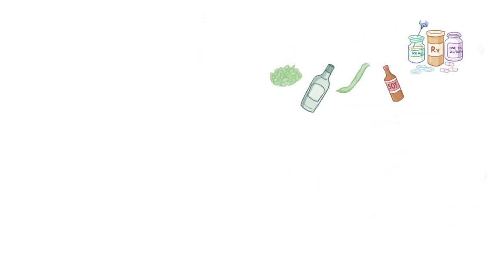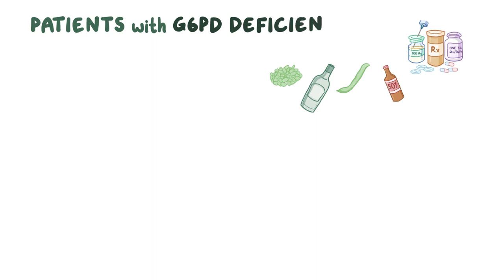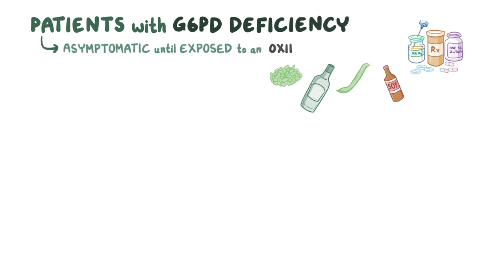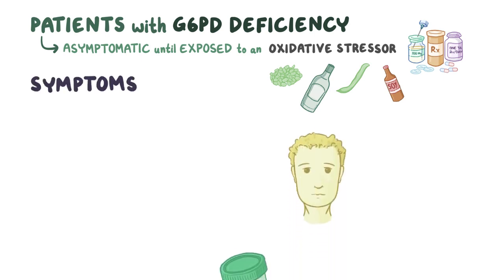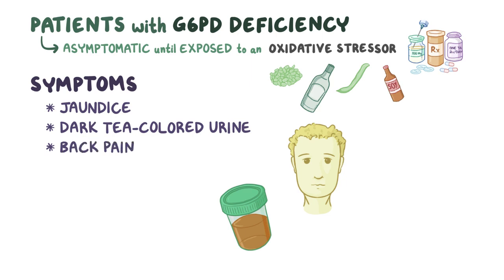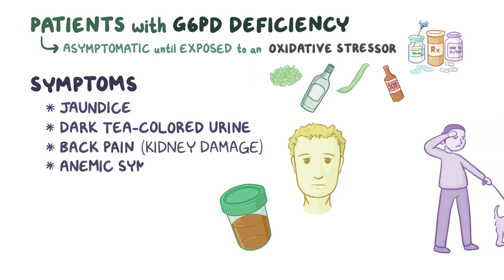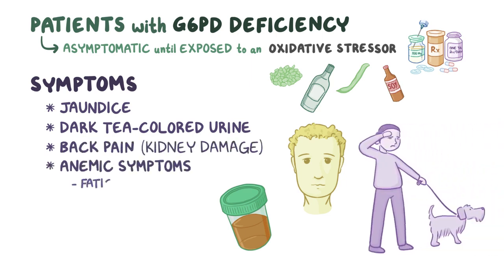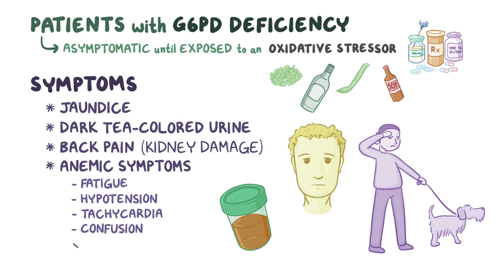Most patients with G6PD deficiency are completely asymptomatic until exposed to an oxidative stressor. Symptoms of acute hemolysis include jaundice, dark tea-colored urine, back pain due to kidney damage, and anemic symptoms like fatigue, hypotension, tachycardia, confusion, and others.